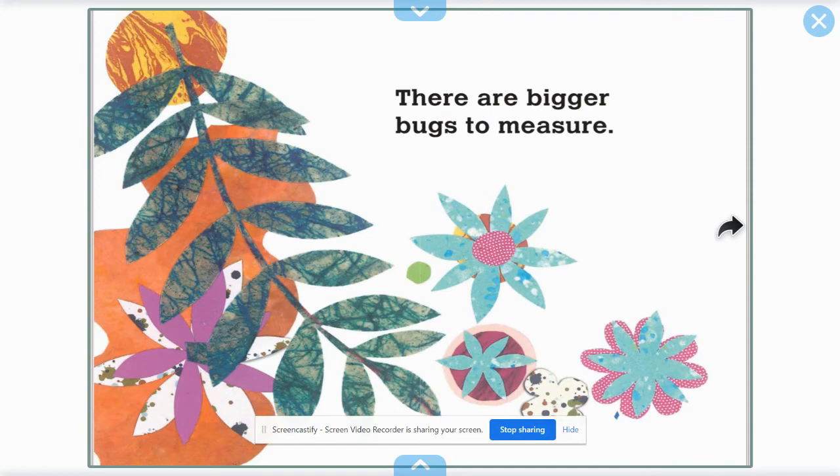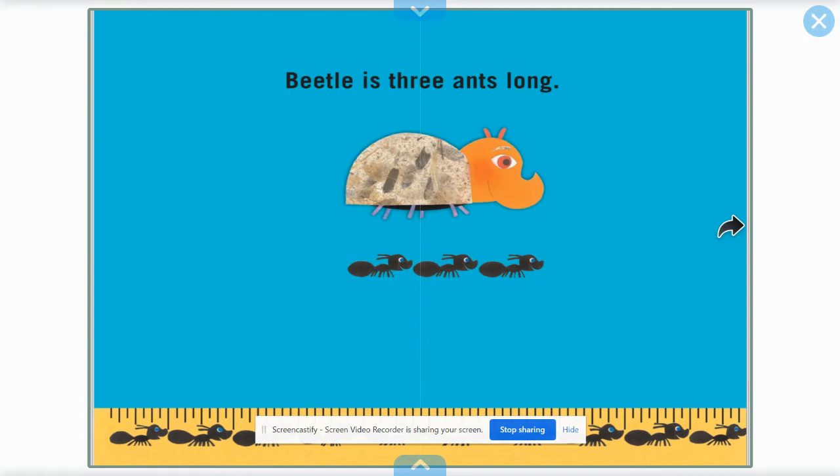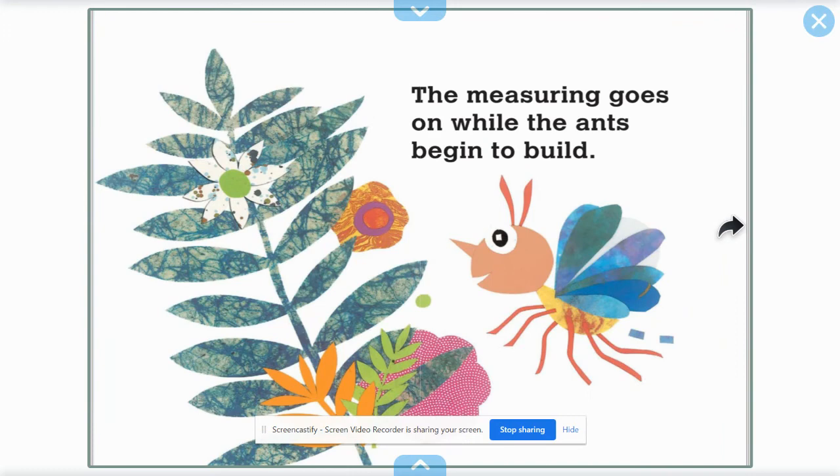There are bigger bugs to measure. Walking stick is six ants long. Butterfly is five ants long. Beetle is three ants long.